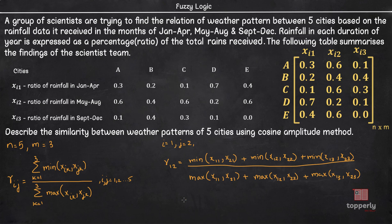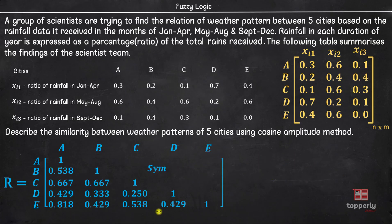So, on computation we have 0.2 plus 0.4 plus 0.1 divided by 0.3 plus 0.6 plus 0.4 which equals 0.538. Similarly, if you calculate other values of Rij, you will get a tolerance relation R.